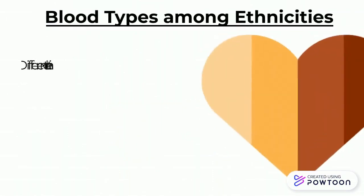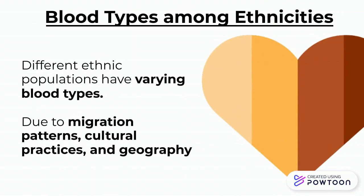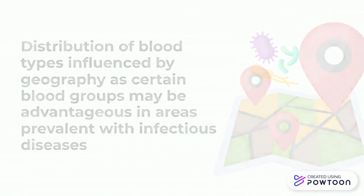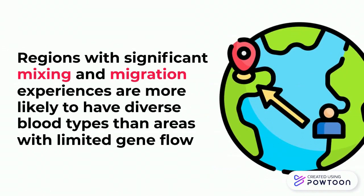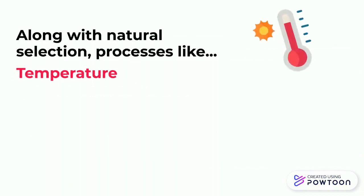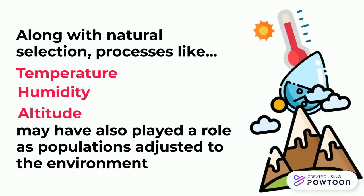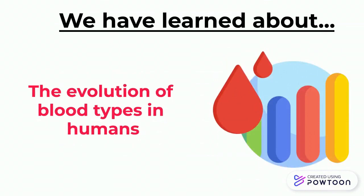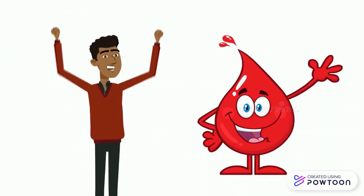Different ethnic populations also have varied blood types. This can be due to factors such as migration patterns, cultural practices, and geography. The distribution of blood types can be influenced by geography as certain blood types have advantages in areas where there are prevalent infectious diseases. Additionally, regions with significant mixing and migration are more likely to have diverse blood types than areas with limited gene flow. Natural selection processes driven by factors like temperature, humidity, or even altitude may have also played a role as populations adjusted to the environment around them. Therefore, we have learned about the different blood types, their medical significance, and a little bit about how they evolved in humans.